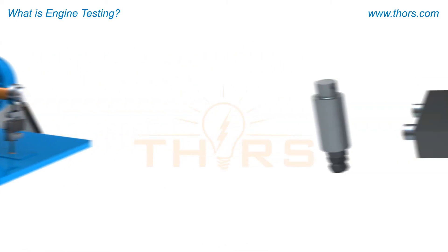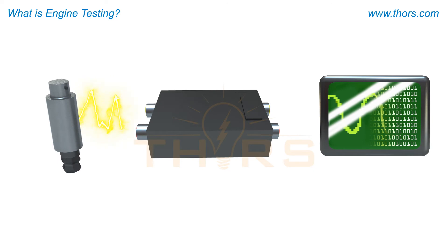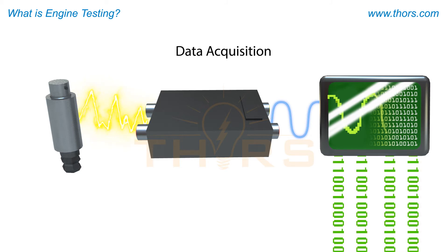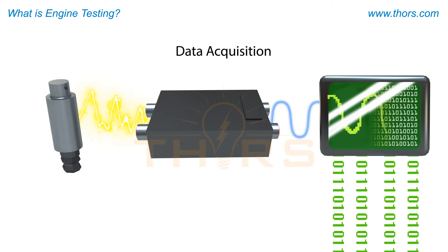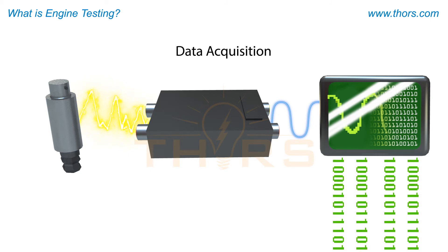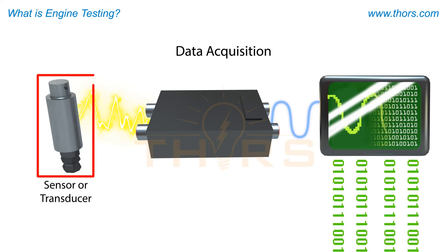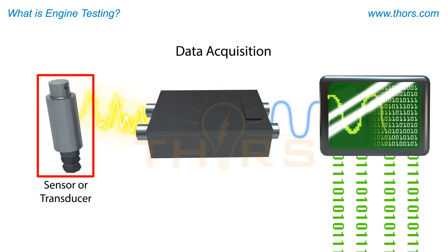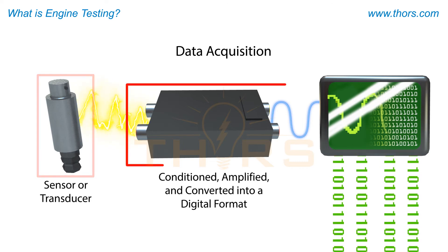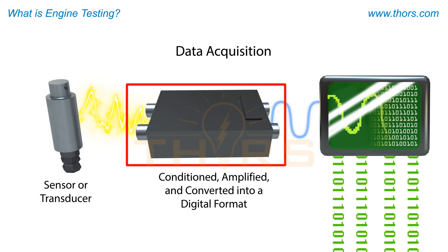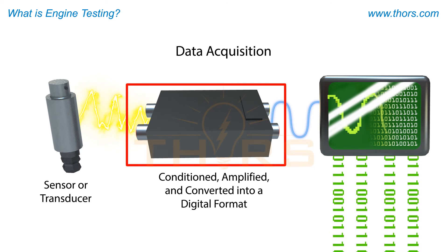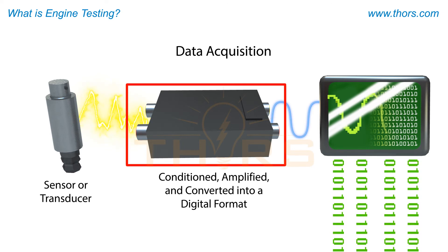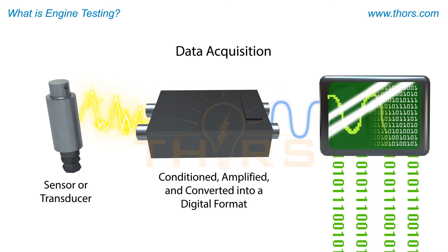Data will need to be collected in order to see how an engine is performing. This information is collected through a process known as data acquisition. Data acquisition functions by picking up a signal from a sensor or transducer. This signal will then be conditioned, amplified, and converted into a digital format before being transferred to a computer for further analyzation.